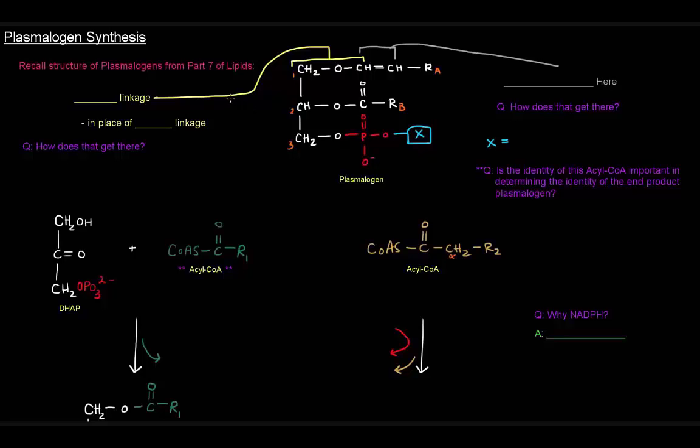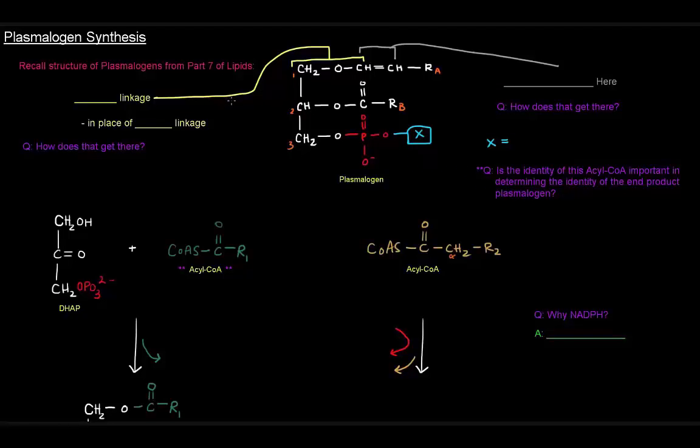If you recall from part 7 on lipids, we talked about plasmalogens as being glycerophospholipids with ether linkages. That ether linkage is shown here in place of an ester linkage, which is normally there because of an acyl group, which is the case at carbon number 2 here.